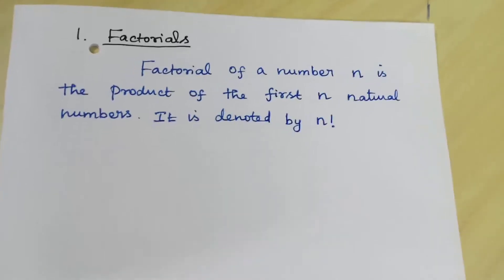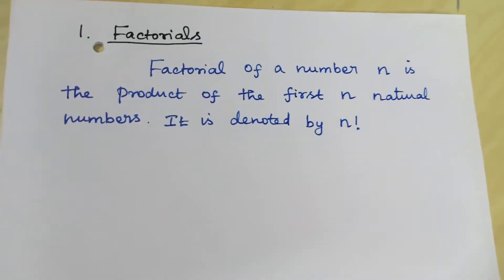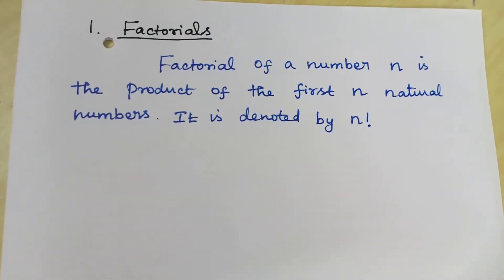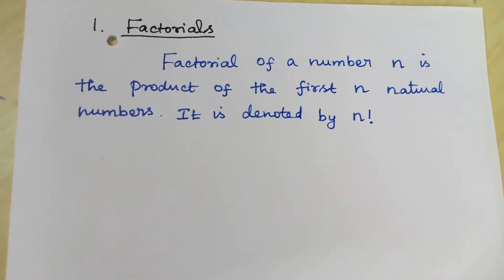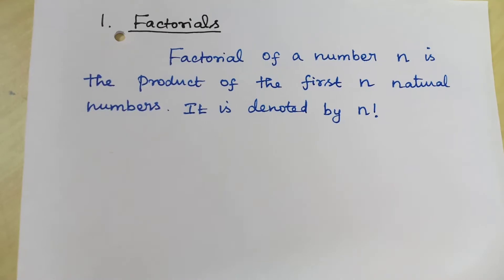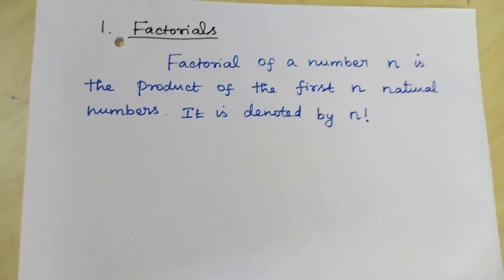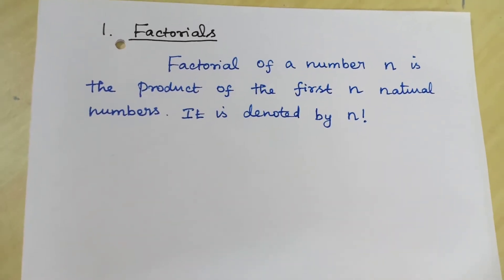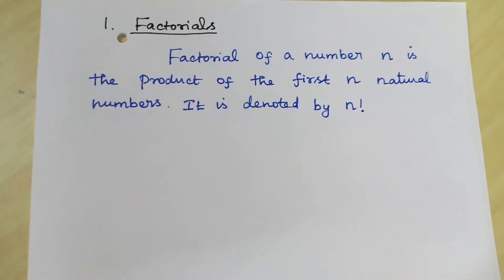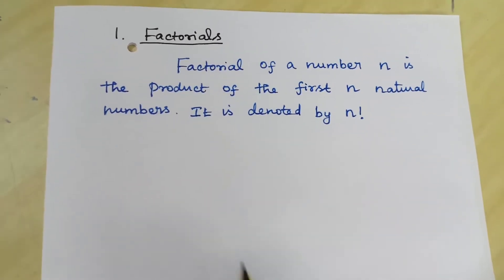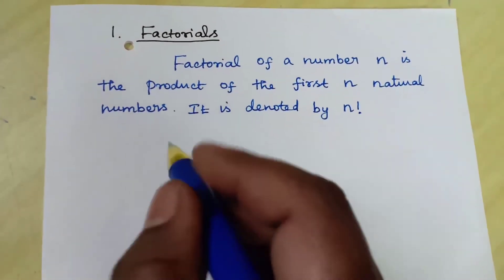Factorial of a number n is the product of the first n natural numbers. It is denoted by n factorial. So by the definition,